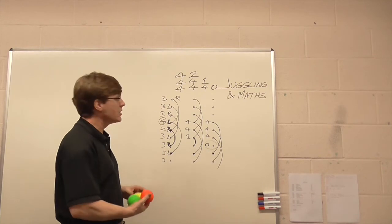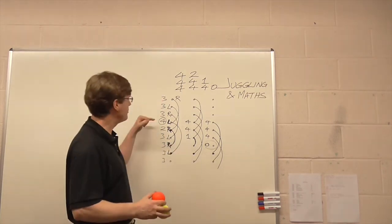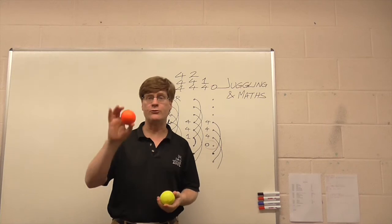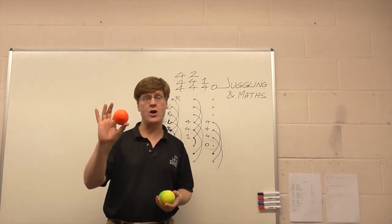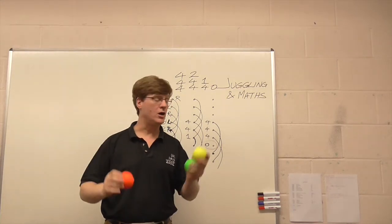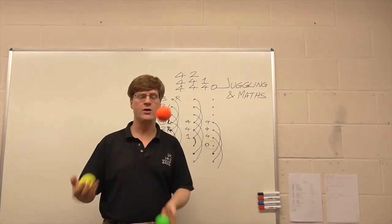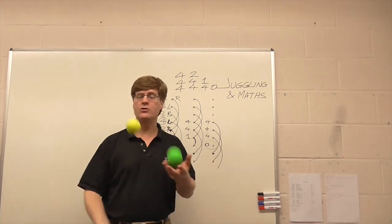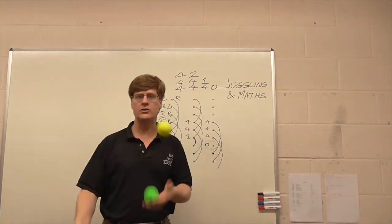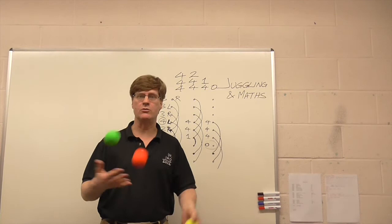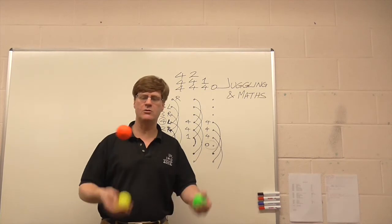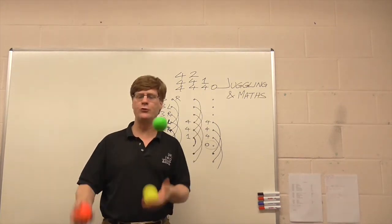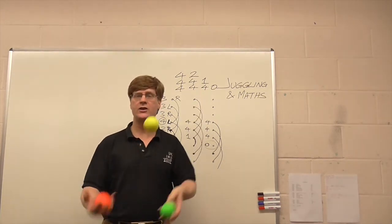In the middle of juggling three balls, I should be able to do a four and a two. I'll do the four with the orange ball. You will see next time round that I do the four and the two — I'm just holding up the two. That time it was the green, this time it's the yellow. I can do a four and a two.